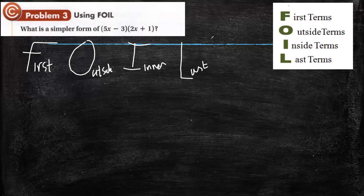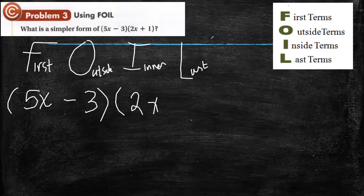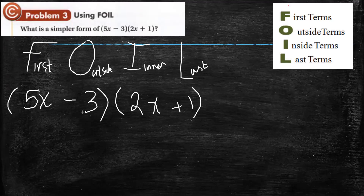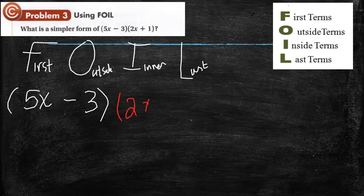So, what does that mean? If you have 5x minus 3 times 2x plus 1, now the first — what does it mean? Look at the first binomial here. What is the first monomial? 5x. I want to write this in another color to understand. Here is 2x plus 1.